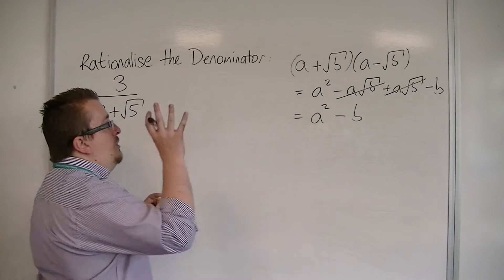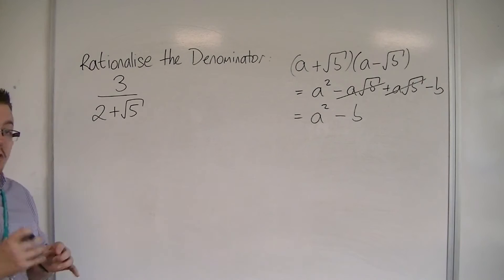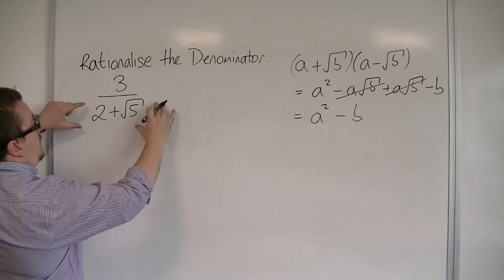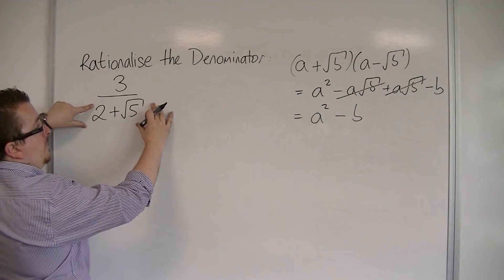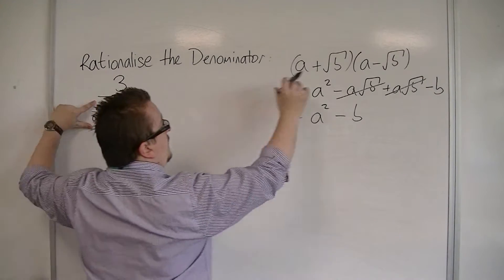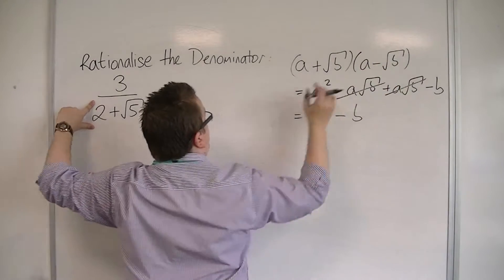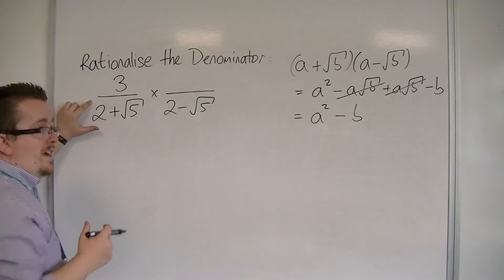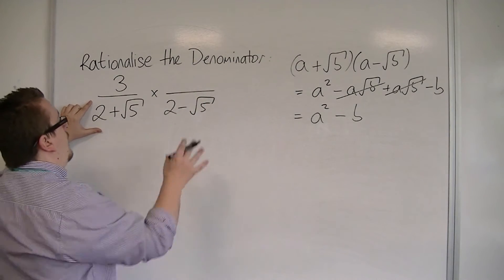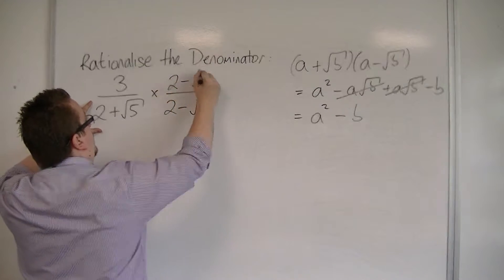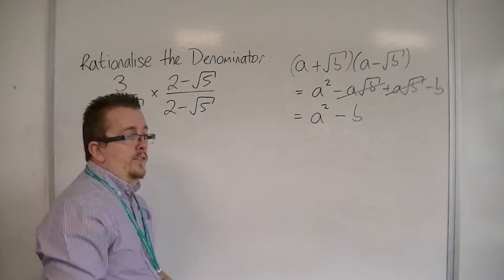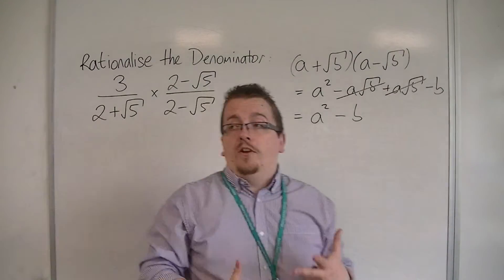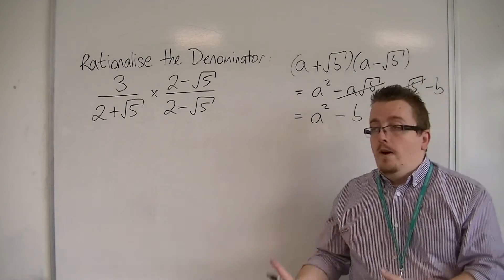So that means I could use that technique in order to rationalize the denominator, because you can imagine that the a plus root b is the 2 plus root 5. So if I multiply the 2 plus root 5 by 2 minus root 5, in order to make sure the fraction doesn't change, I'm going to have to have 2 minus root 5 in the numerator. So effectively, I'm multiplying my original problem by 1. So it won't change the overall answer.